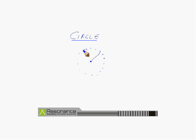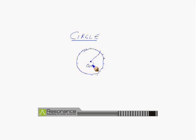So we get the shape of a circle. This fixed point is called the center of the circle, and the constant distance from the fixed point is called the radius of the circle.